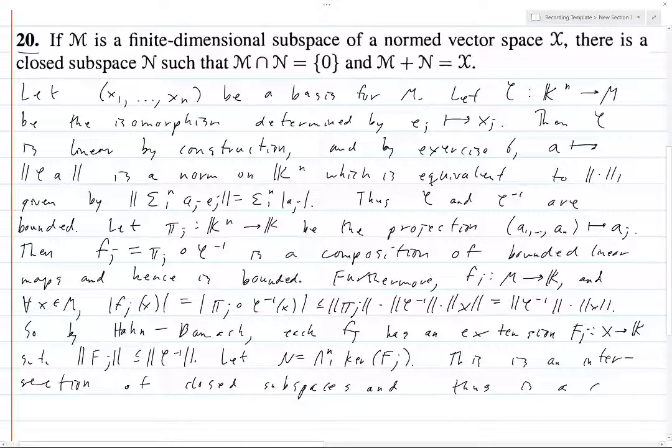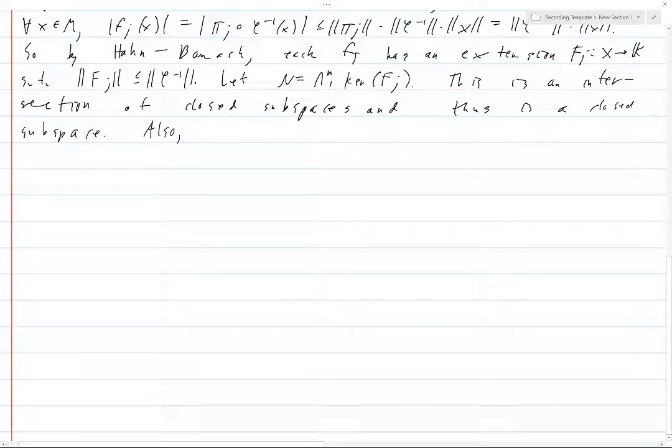Also, what else do we have? I'll leave that there so that we have this Fⱼ here for reference. So what is M intersect N? This is just the intersection from 1 to n of the kernel of Fⱼ intersected with M.